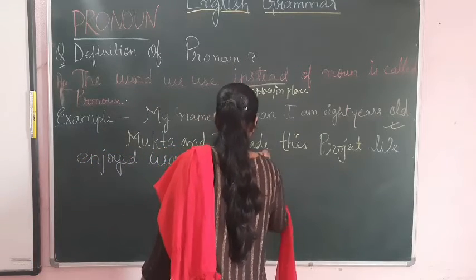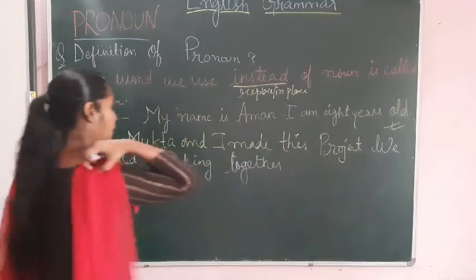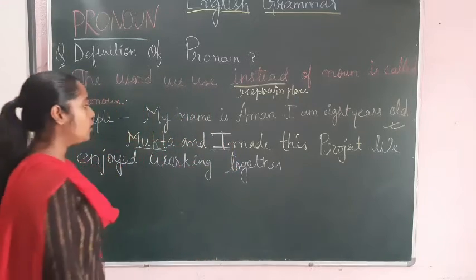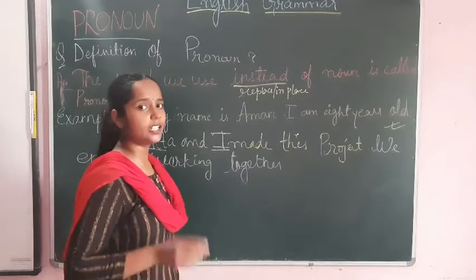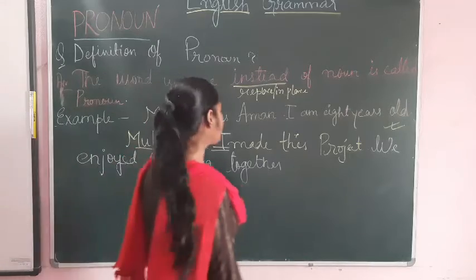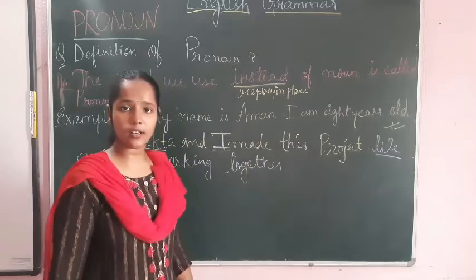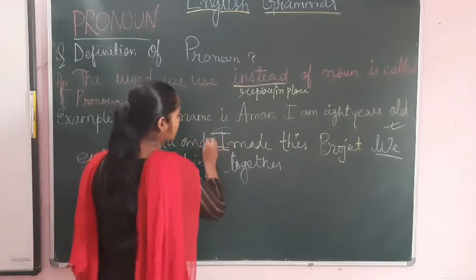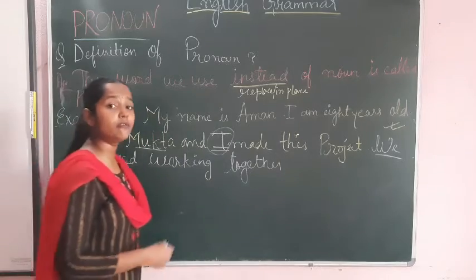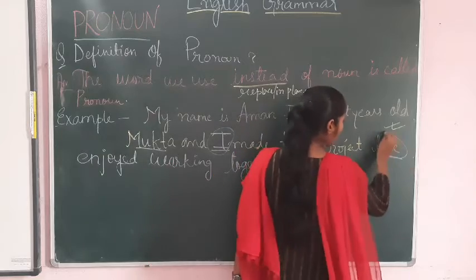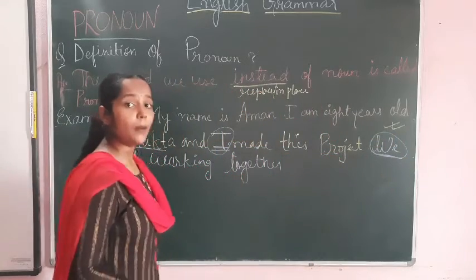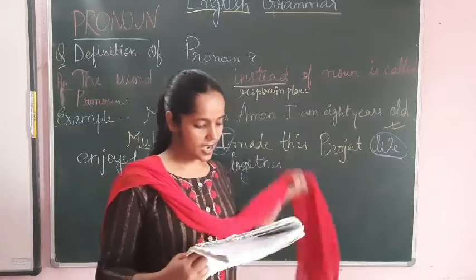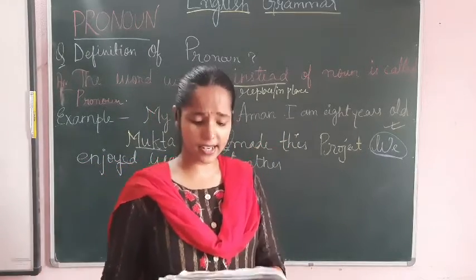So what we understand is that 'Mukta and I' involves two persons. They made the project — a project is like homework, a task which has been allotted to us. I have used 'we' here because there are two persons — more than one person becomes 'we'. If there is one person we use 'I', and if there are two or more persons we use 'we'. So 'we' is the pronoun replacing the noun here.